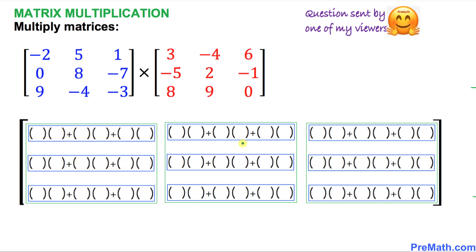Our answer matrix is going to look like this. Since we are dealing with 3 by 3 matrices, our answer matrix is going to be 3 rows and 3 columns as well — 3 rows and 3 boxes meaning 3 columns. So let me get started.